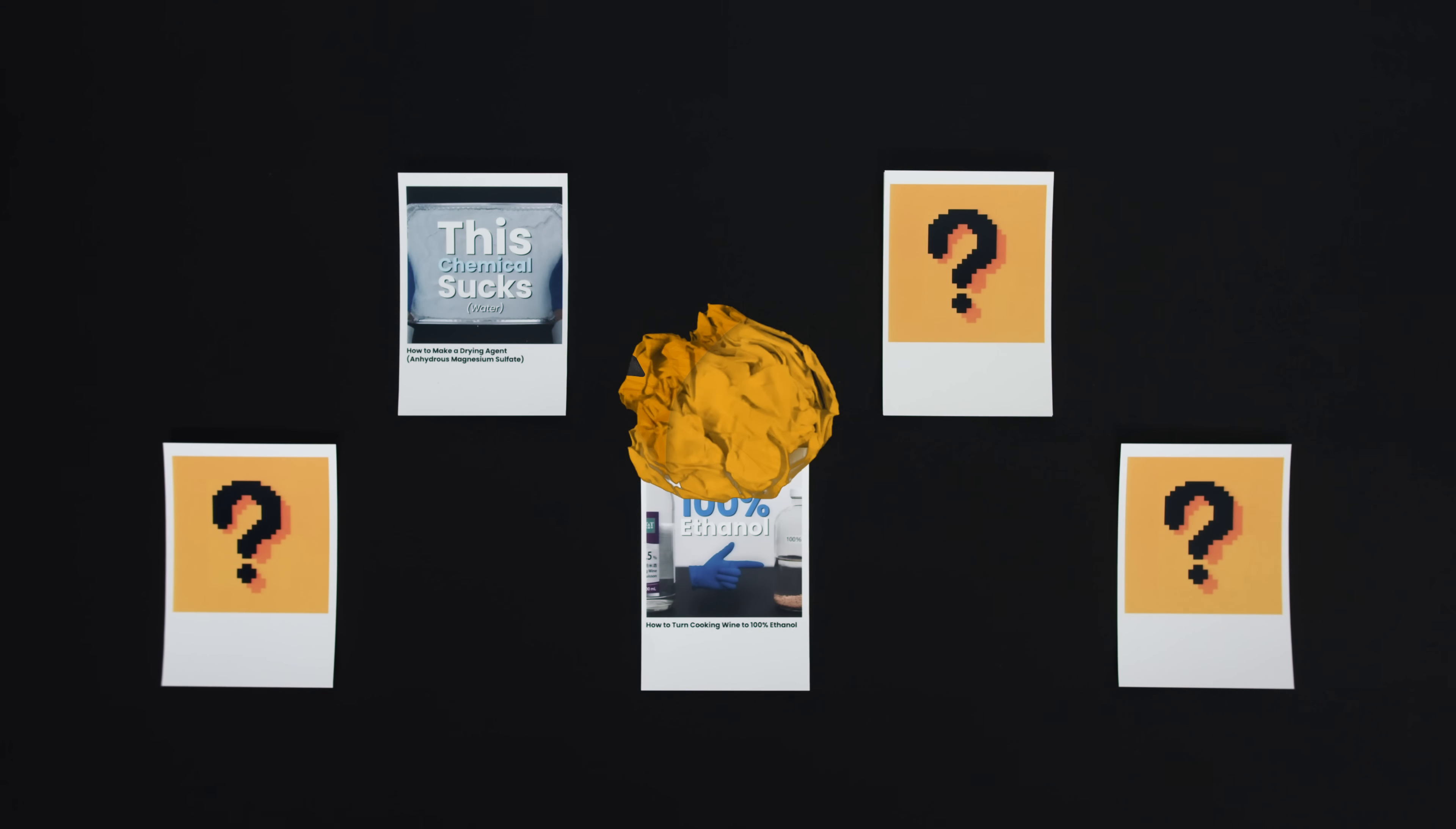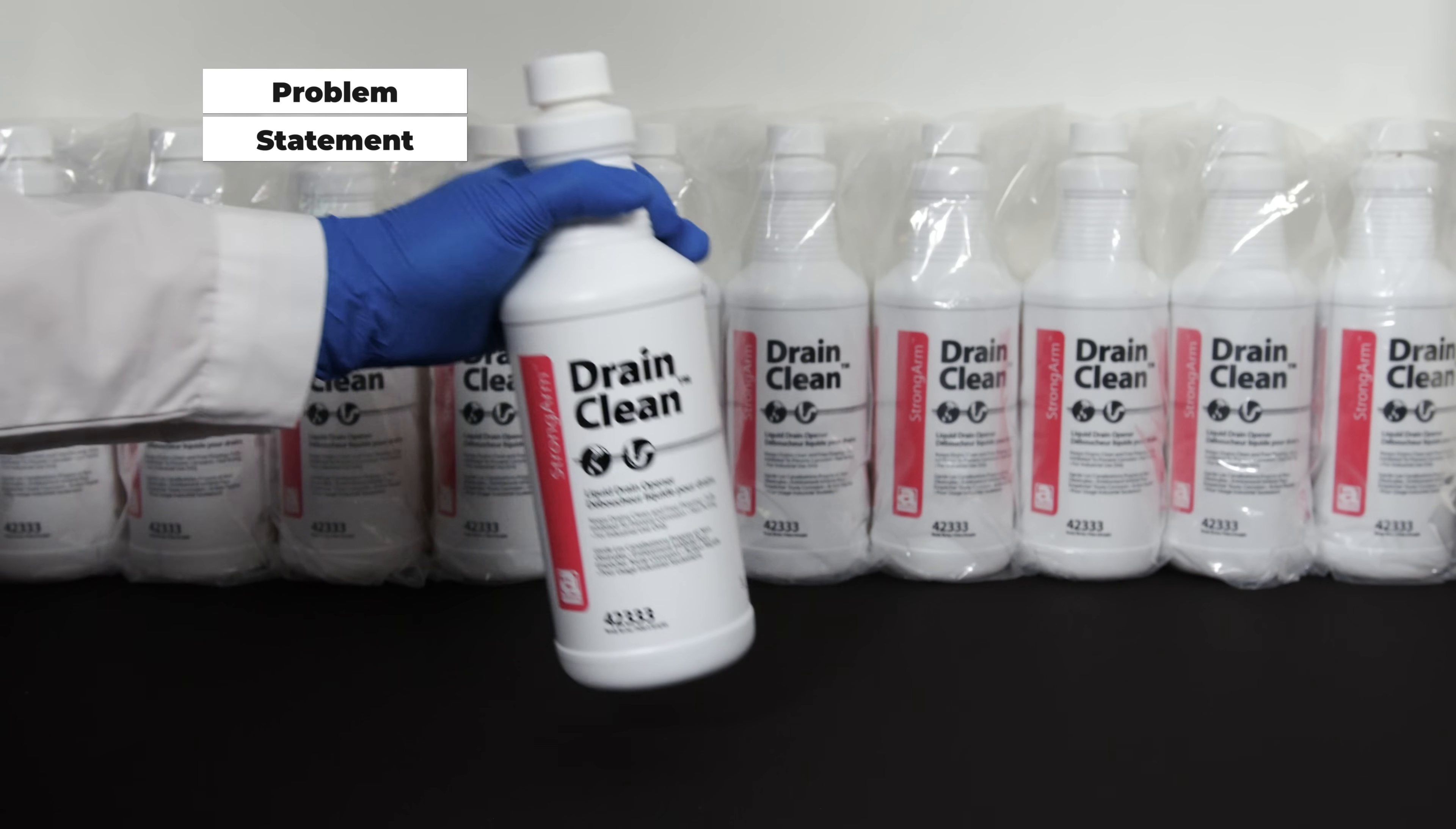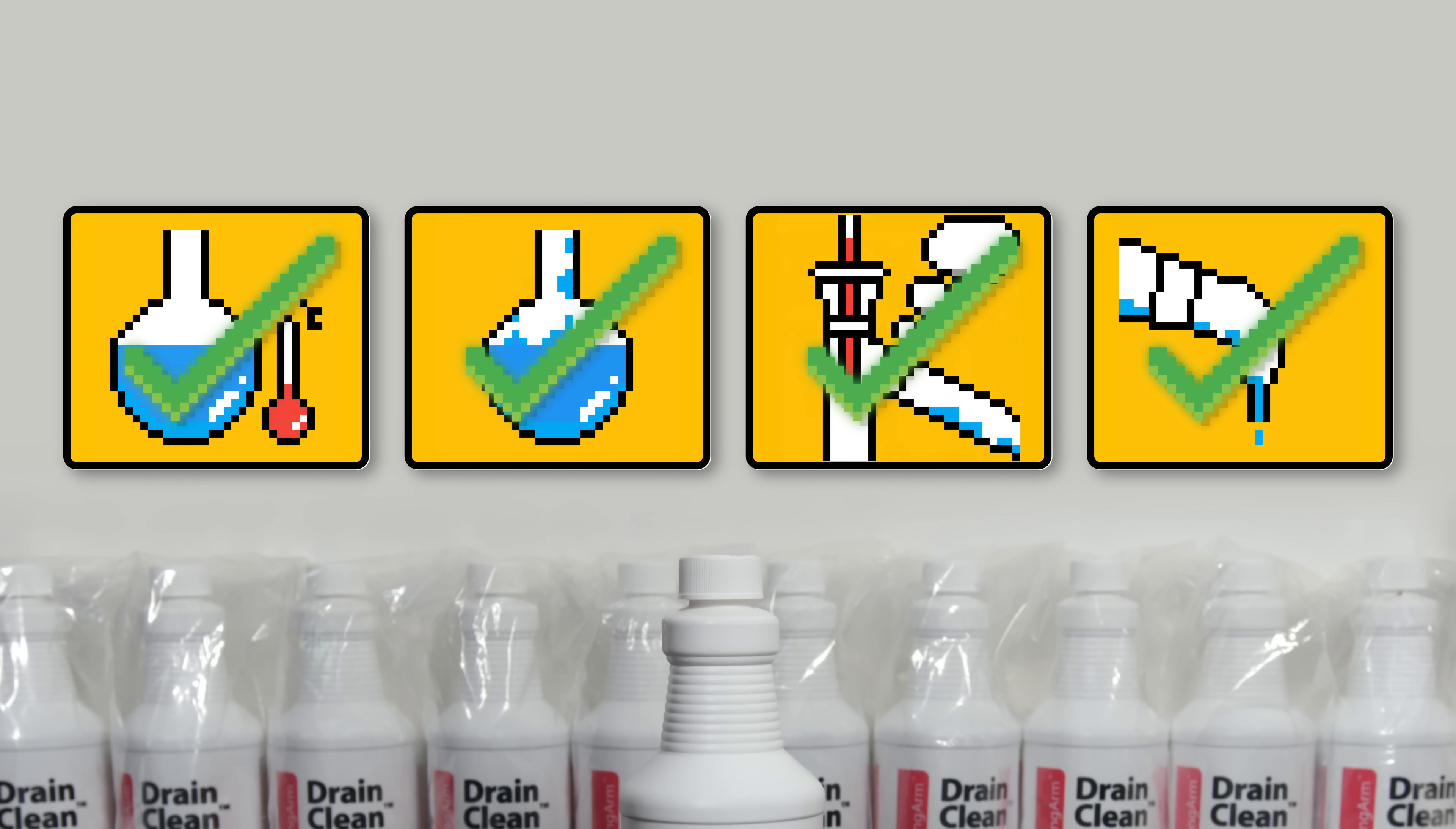Welcome back to part 4 of the OTC chemical series, and today we are distilling concentrated sulfuric acid. Concentrated sulfuric acid is an extremely useful reagent that can be found in some drain cleaners. However, the distillation may not be as straightforward as you might think. I have been fine-tuning this process on and off for 9 years.